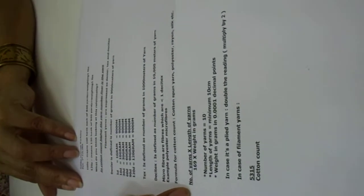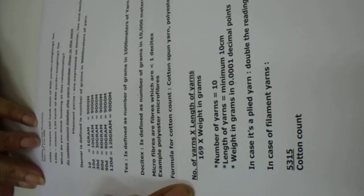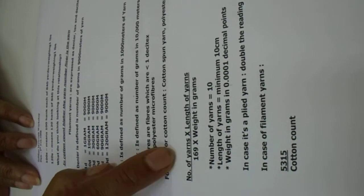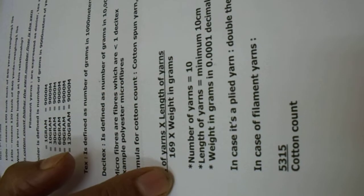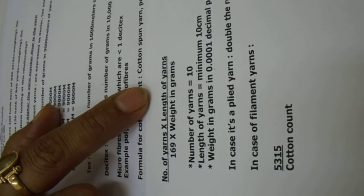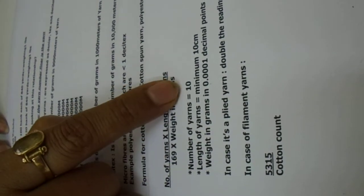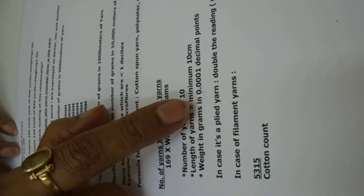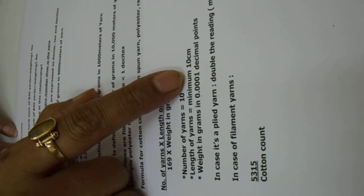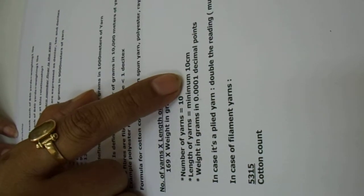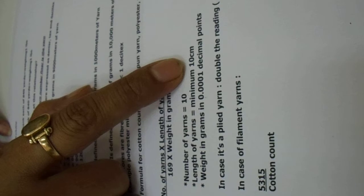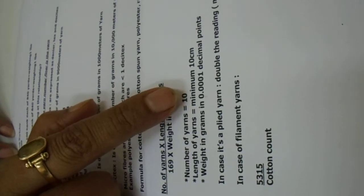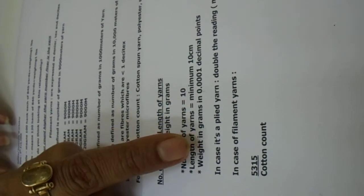The formula for calculating the spun yarn number is: number of yarns multiplied by length of yarns multiplied by 169, divided by weight in grams. We take 10 yarns, the length should be a minimum of 10 centimeters, and the weight in grams must be measured on an analytical balance capable of reading up to four decimal points — a high-precision balance. We will go to the testing laboratory to see how the calculation is done.